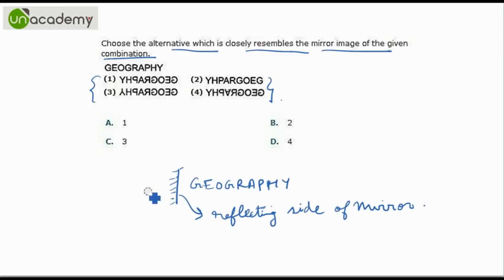So first of all we will get a G like this, an inverted E, O as it is, again a G, R like this, A as it is, inverted P, H and a Y. So now we will try to match this pattern with one of the options.